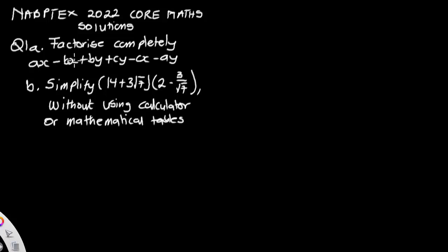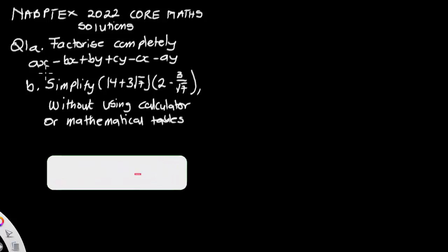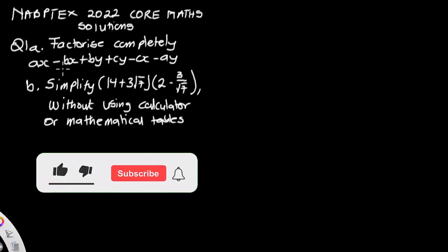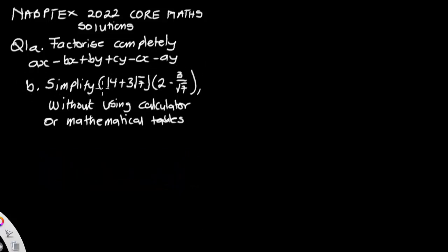Hello everyone, you are welcome to this channel. In this video we want to solve NAPTEST 2022 Core Mathematics. Question one reads: factorize completely the expression ax minus bx plus by plus cy minus cx minus ay, and part b says simplify this expression without using a calculator or mathematical tables.